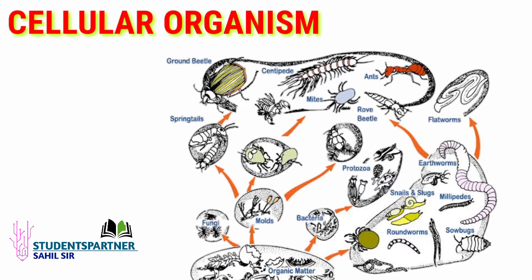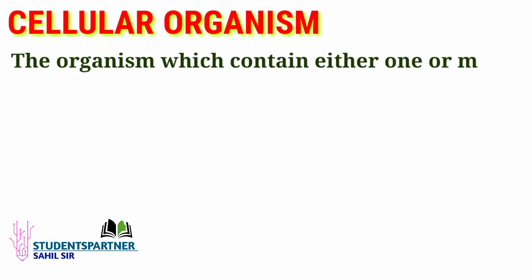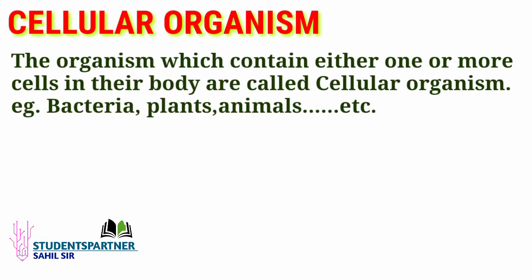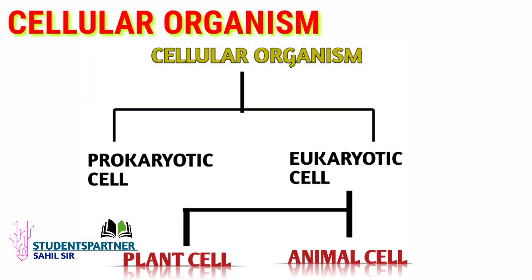That was about the virus — non-cellular organisms. Now let's discuss cellular organisms. A cellular organism is one which contains either one or many cells in its body. Such organisms that contain cells in their body are called cellular organisms. Examples include bacteria, plants, animals, cockroaches — everything we can or cannot see. Cellular organisms are further divided into two parts: those with prokaryotic cells and those with eukaryotic cells.